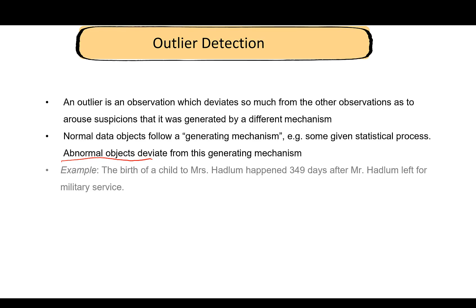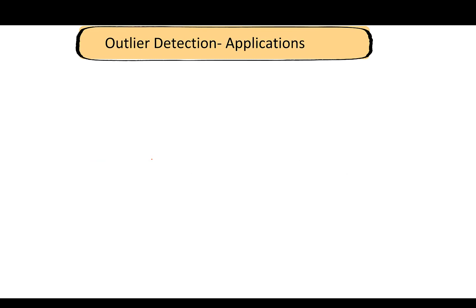An example of outlier detection is this: there was a case of Hadlam versus Hadlam. Mr. Hadlam filed a lawsuit against Mrs. Hadlam. Mrs. Hadlam had a child 349 days after Mr. Hadlam left for military service. The average human gestation period is 280 days. Statistically speaking, 349 is far away from 280, so 349 is possibly an outlier. It is up to you what conclusions you could draw from this.